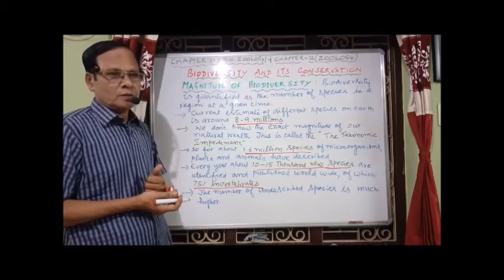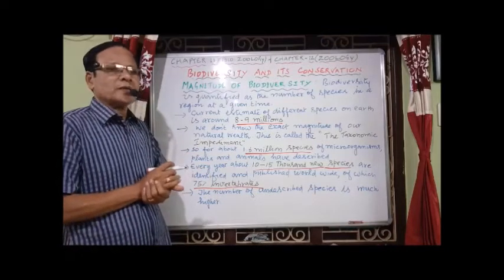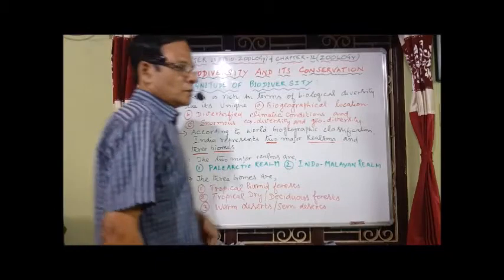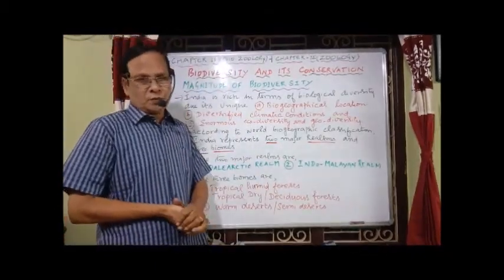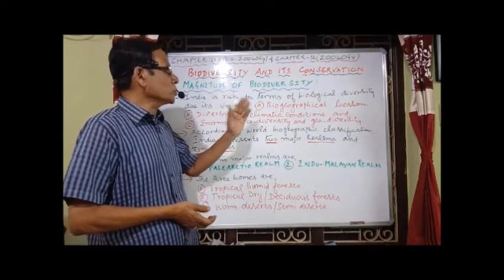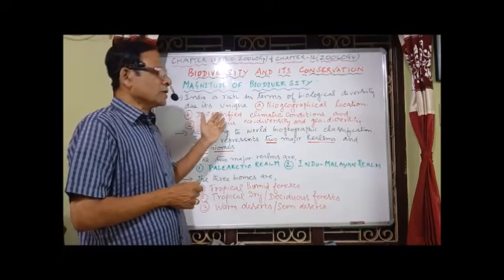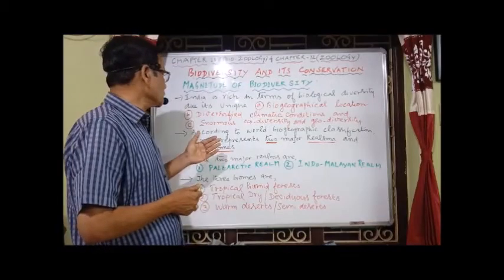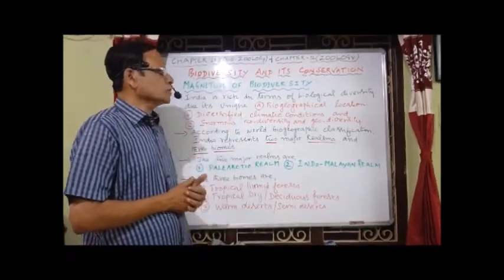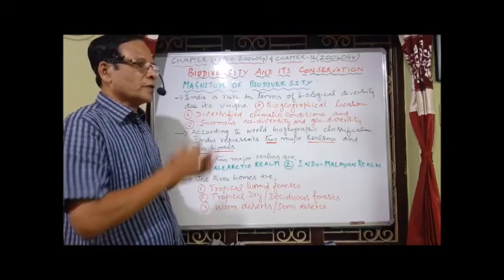India is rich in biodiversity because of its unique biogeographical location, diversified climatic conditions, and enormous eco-diversity and geo-diversity. These are the unique features that make India one of the richest sources of biodiversity.